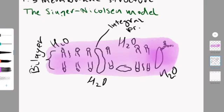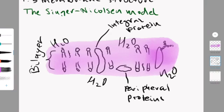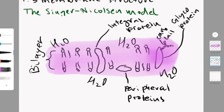Then there are the integral proteins, which are found together with the heads and the tails of the phospholipids. Then there are peripheral proteins, which are only found among the heads of the phospholipids. There is a glycoprotein that has a carbohydrate tail and there is also cholesterol.